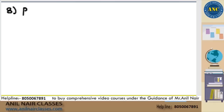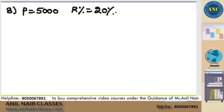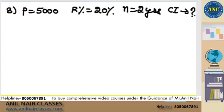Write down sir. P is equivalent to 5000, R percentage is 20%, N is equivalent to 2 years. Find the compound interest.